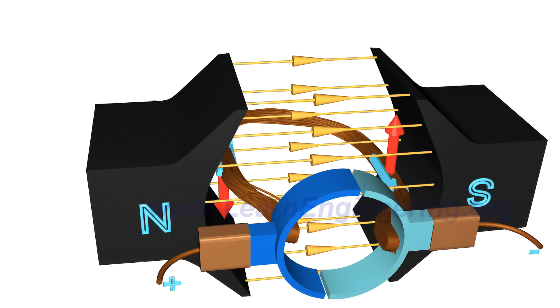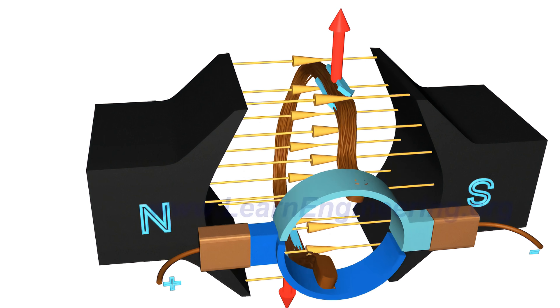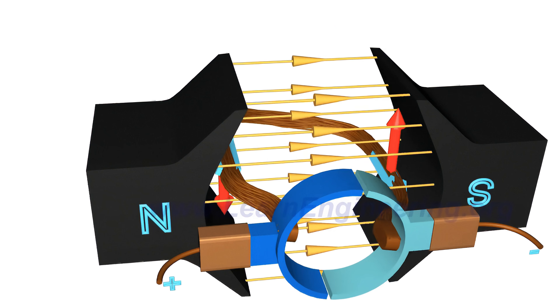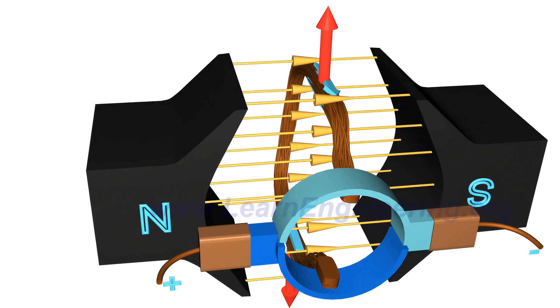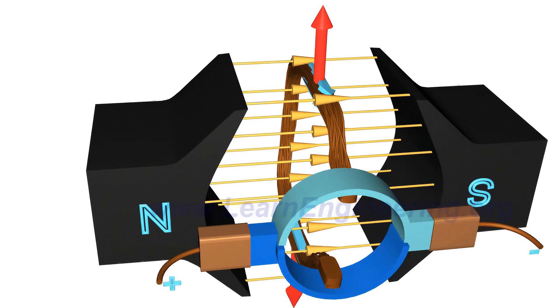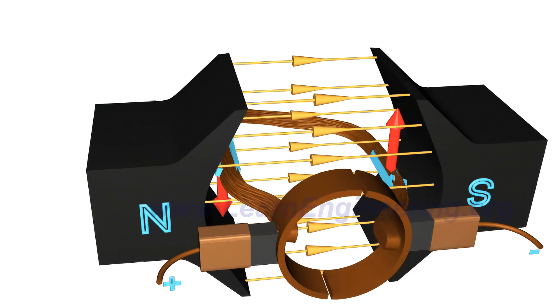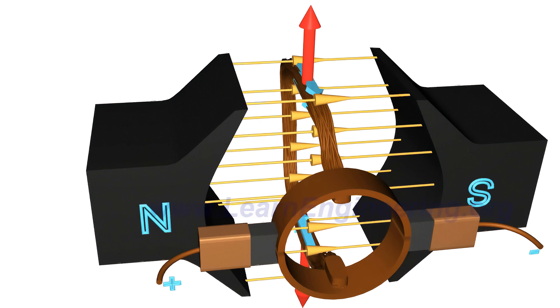But if you observe the torque action on the coil closely, you will notice that when the coil is nearly perpendicular to the magnetic flux, the torque action nears zero. As a result, there will be irregular motion of the rotor if you run such a DC motor.